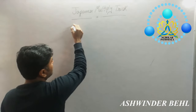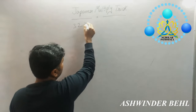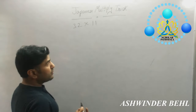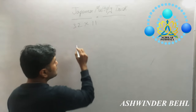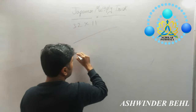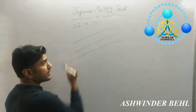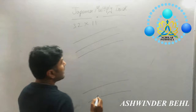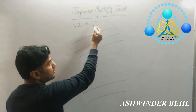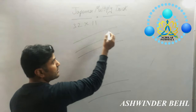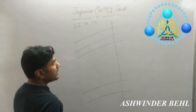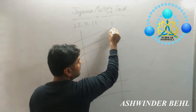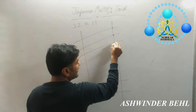Suppose if we have 32 multiplied by 11. Same process we will do. First digit is 3, so you will make 3 lines: 1, 2, 3. And next digit is 2 lines, so you will draw this way. Now you will see the next number on the right hand side is 1, so you will draw only 1 line. And next digit is also 1, so you will draw 1 line. Now you will make a point where the 2 lines intersect.